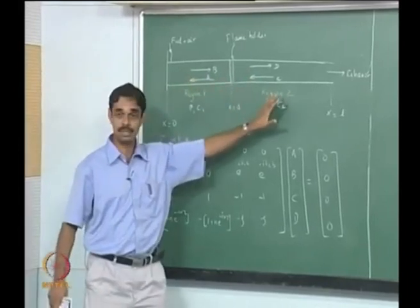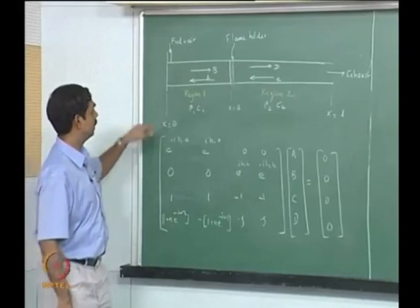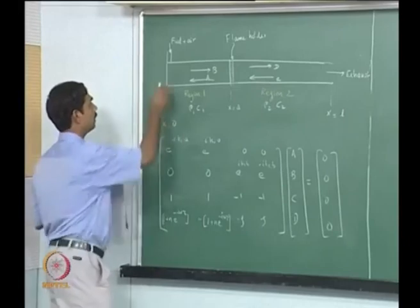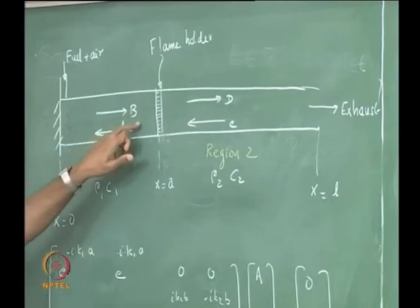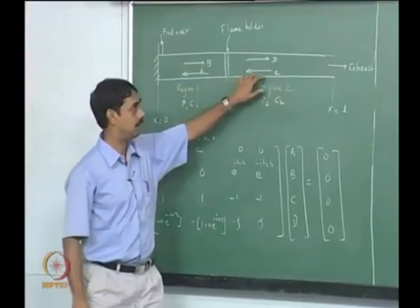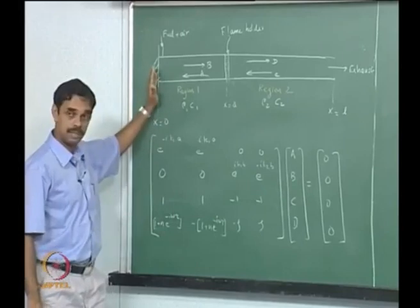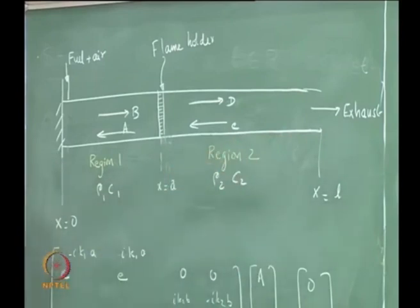Region 1 is cold, region 2 is hot. They can have different temperatures. It is a premixed fuel coming in, burning, and coming out. We have a closed end here and an open end here. We wrote the solution in terms of A and B — the left-running and right-running waves on the left side, and the left-running and right-running waves on the right side. We applied the boundary condition that velocity is 0 at the closed end and pressure is 0 at the open end — the same manner as a quarter wave tube.